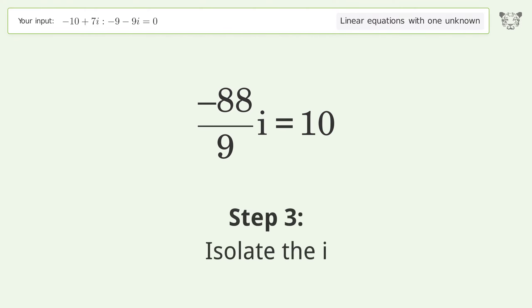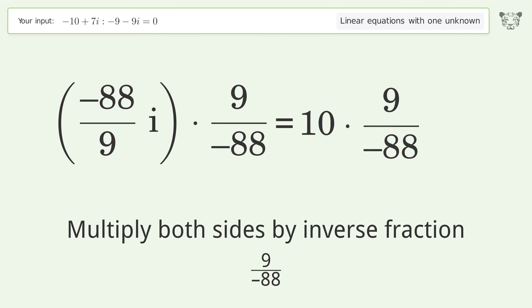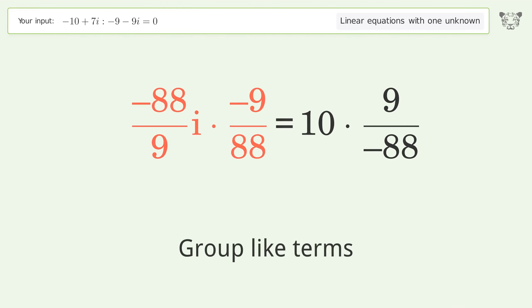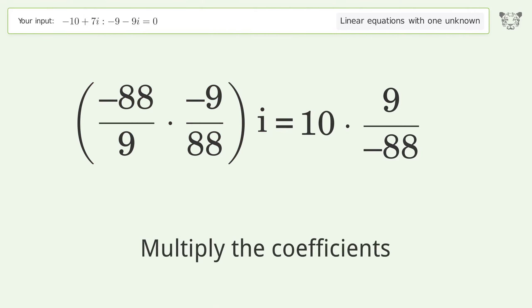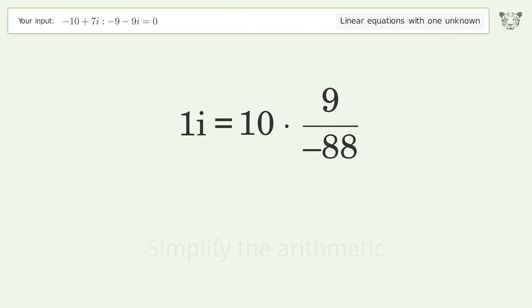Isolate the i. Multiply both sides by the inverse fraction 9 over negative 88. Move the negative sign from the denominator to the numerator. Group like terms. Multiply the coefficients. Simplify the arithmetic.